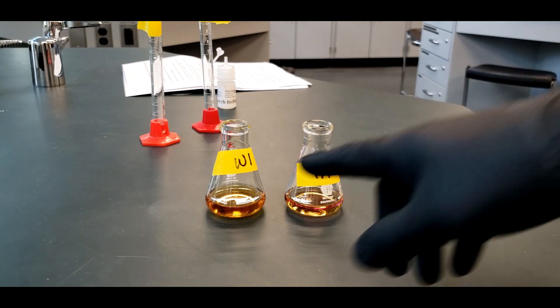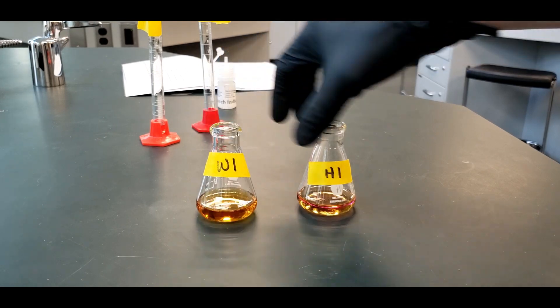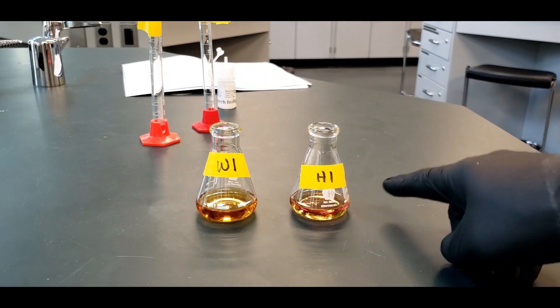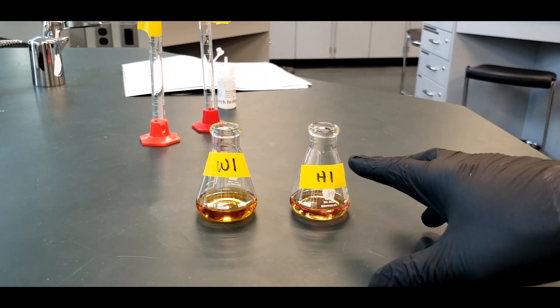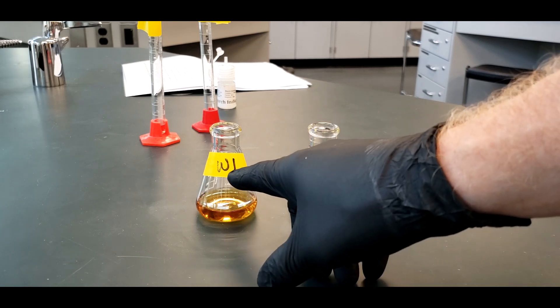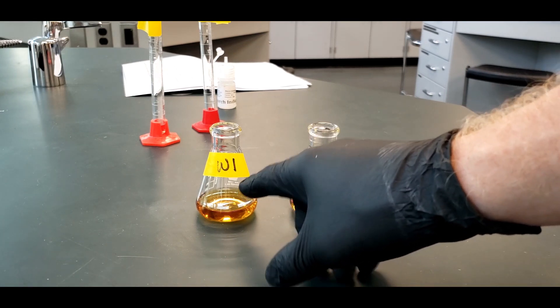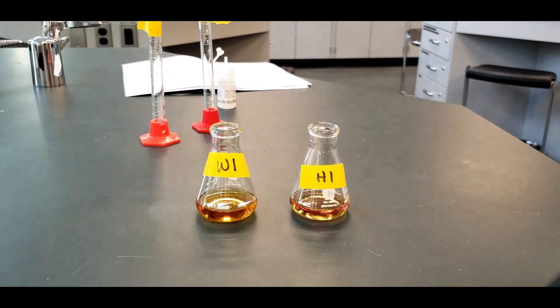So we have our samples. But we have H1 and H2 for sample A and sample B. And then we'll have the W1 and W2 for sample A and sample B. So a total of eight titrations that we're going to do.